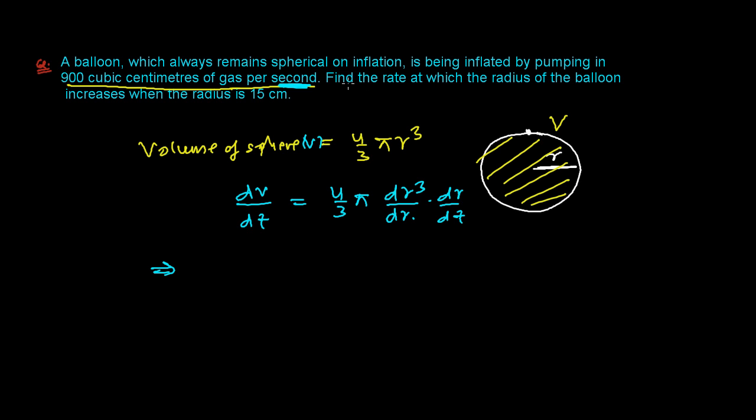Now, find the rate at which the radius of the balloon increases when the radius is 15 centimeter. We need to find out dr over dt, the rate of increase. That determines later if it's positive it means increasing and if it is negative it means decreasing. And now this dV over dt is given by the question.